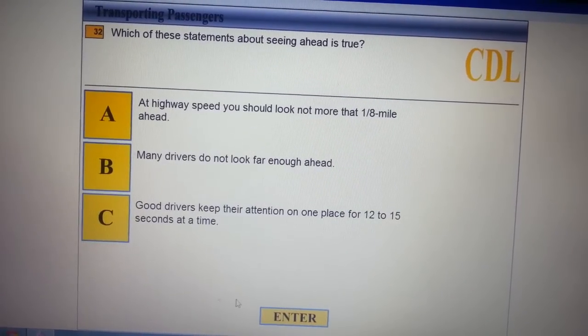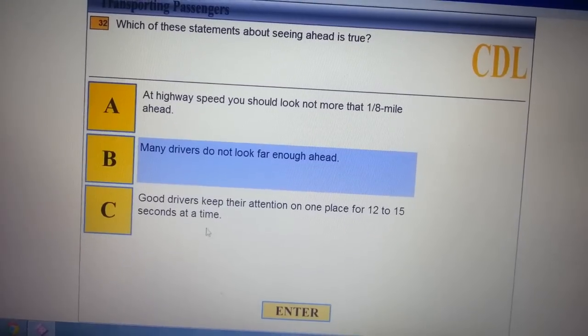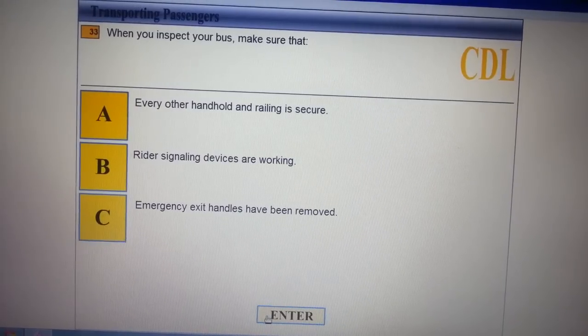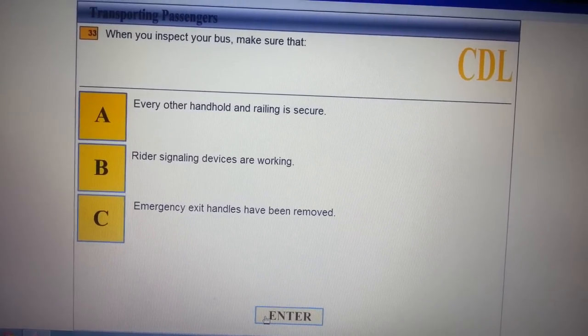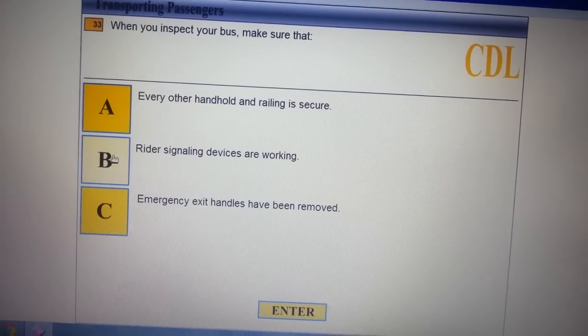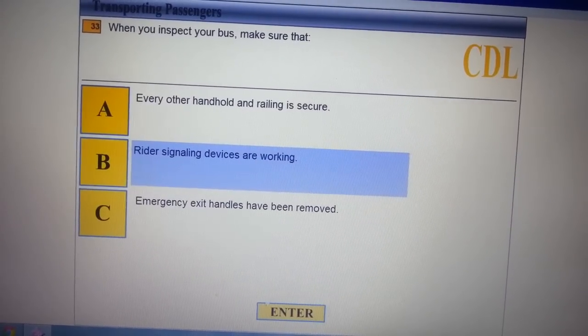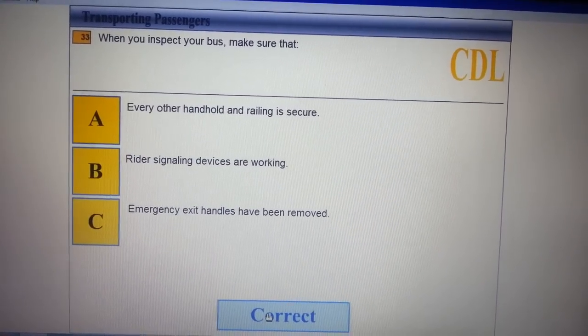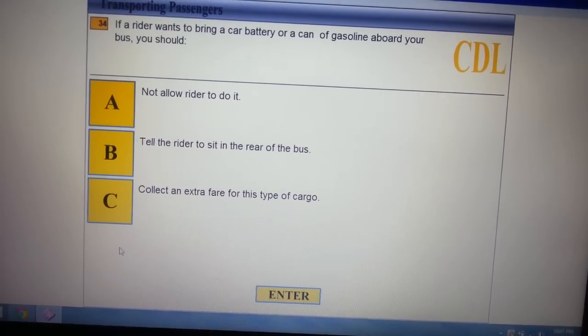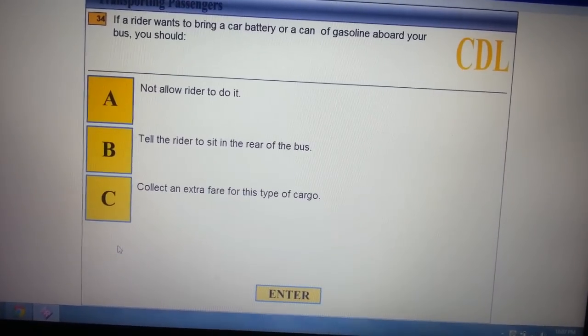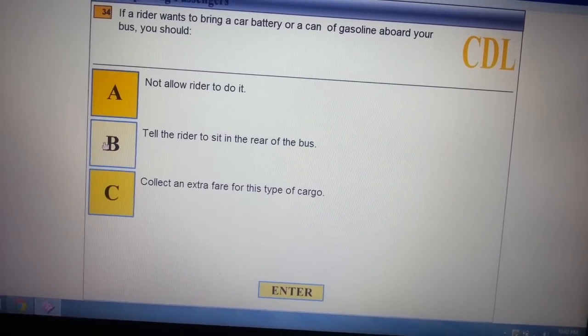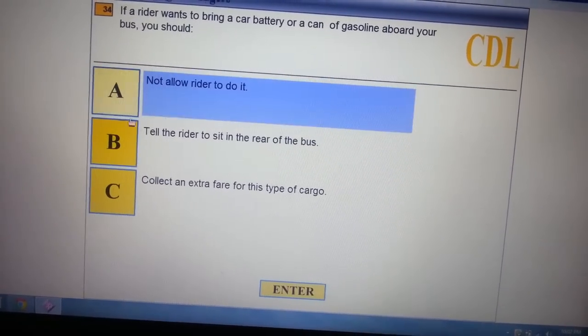Which system is about seeing ahead? You must drive looking ahead. When you inspect your bus, make sure everything is working properly, like the lights and walk-around inspection. If a rider wants to bring a car battery or can of gasoline aboard your bus, you should not allow the rider to do it.